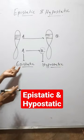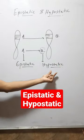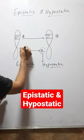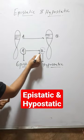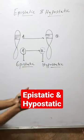So here A is epistatic and B is hypostatic, because this A gene suppresses the expression of this B gene.